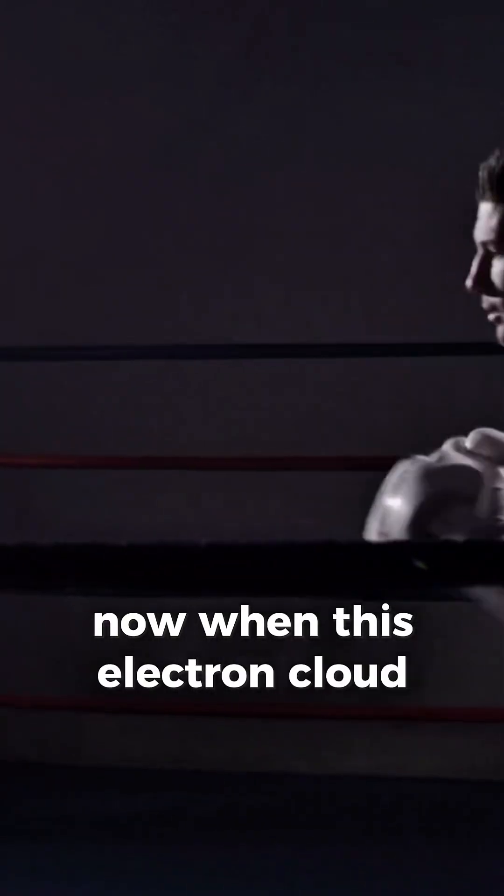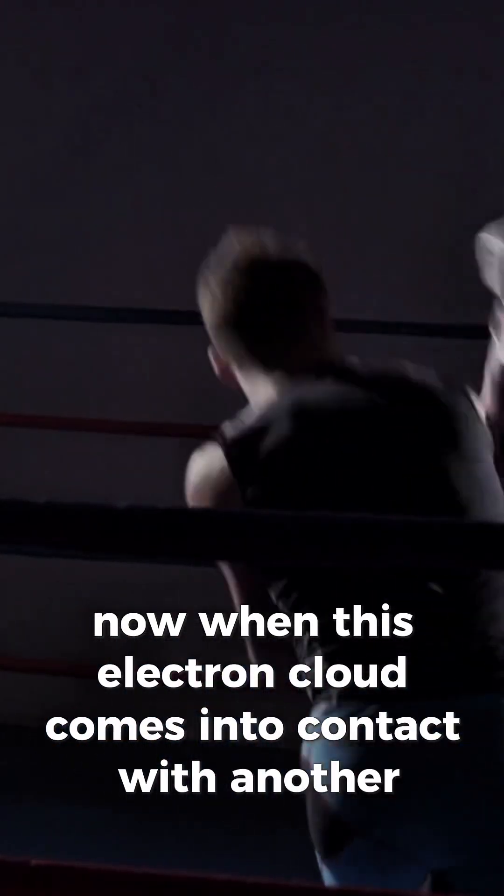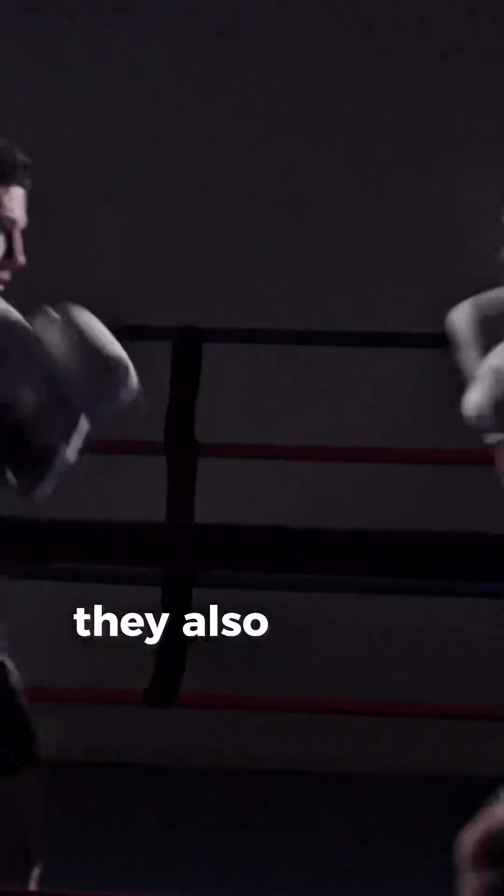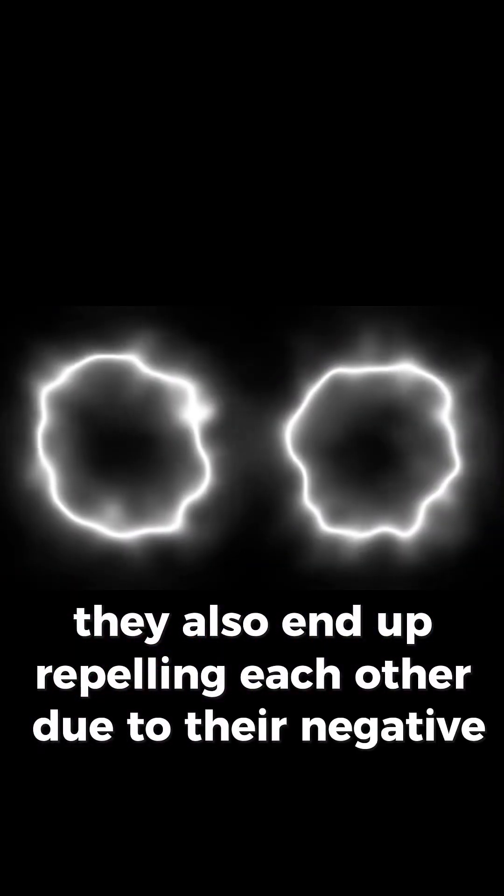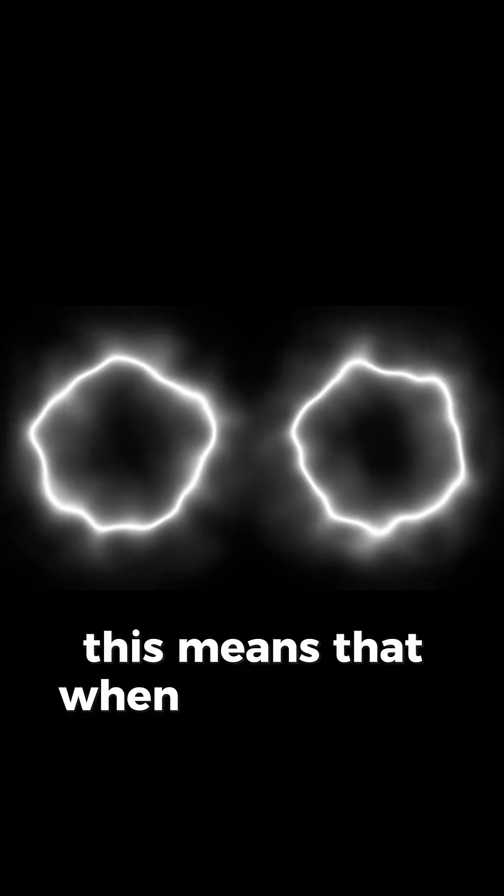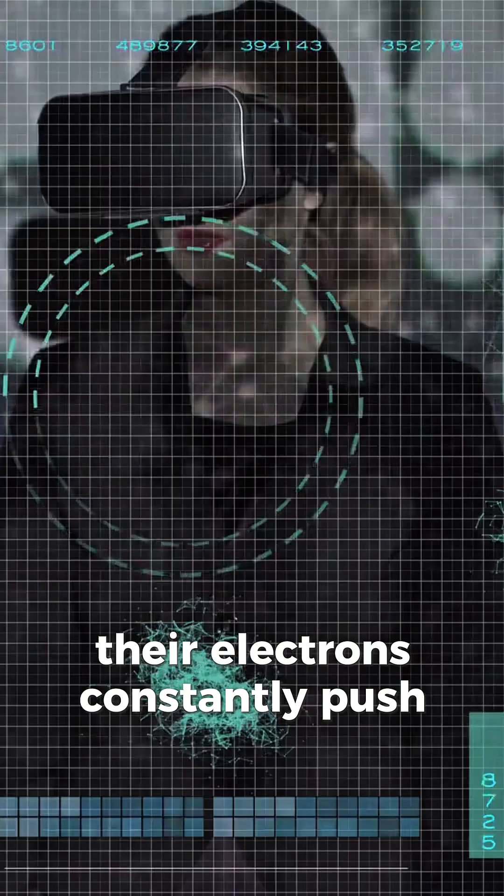Now, when this electron cloud comes into contact with another atom's electron cloud, they also end up repelling each other due to their negative charge. This means that when two objects come into contact, their electrons constantly push each other away.